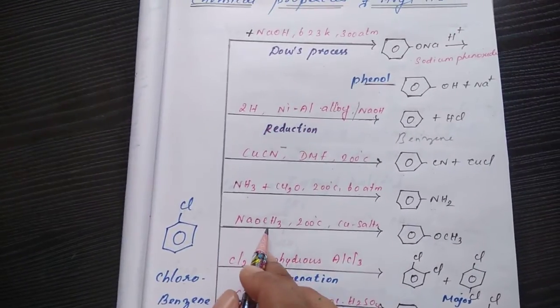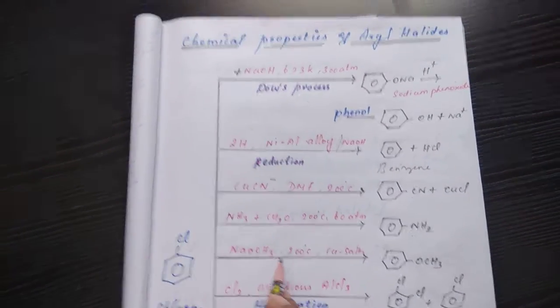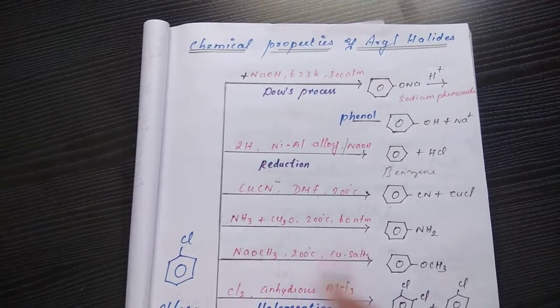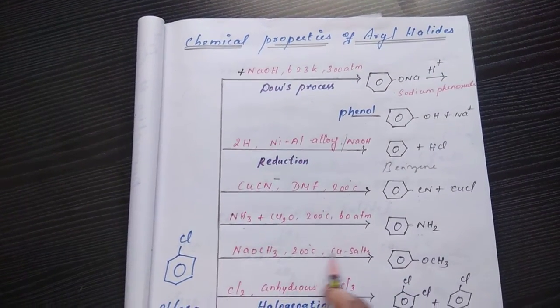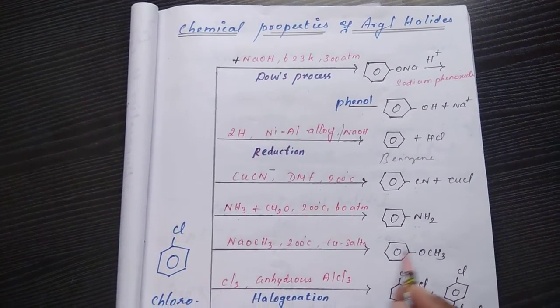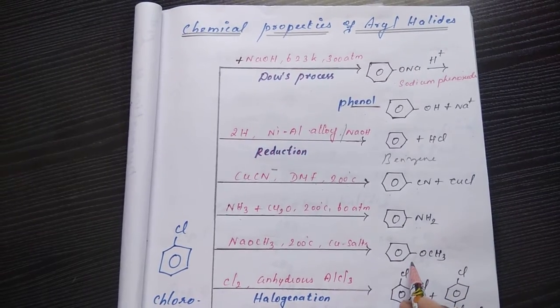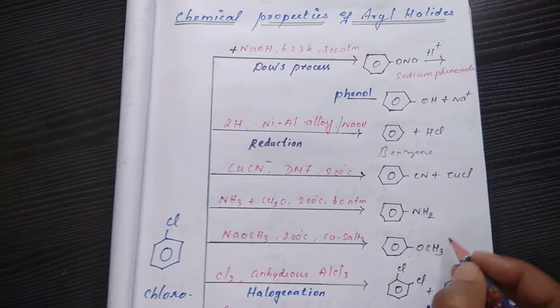Then if I am choosing sodium methoxide, this is again anisole. Aromatic ethers are formed at 200 degree Celsius. In presence of copper salts, we get anisole. This is anisole, again ether, aromatic ether.